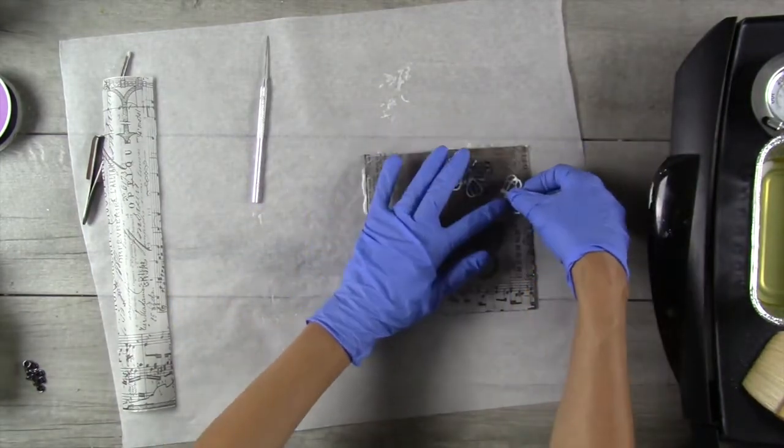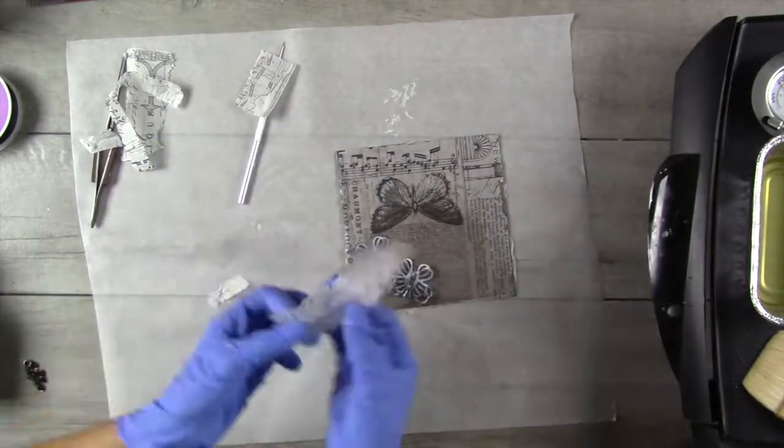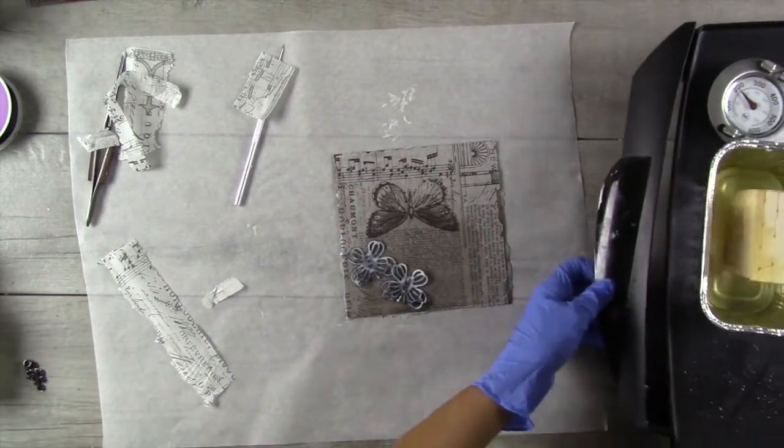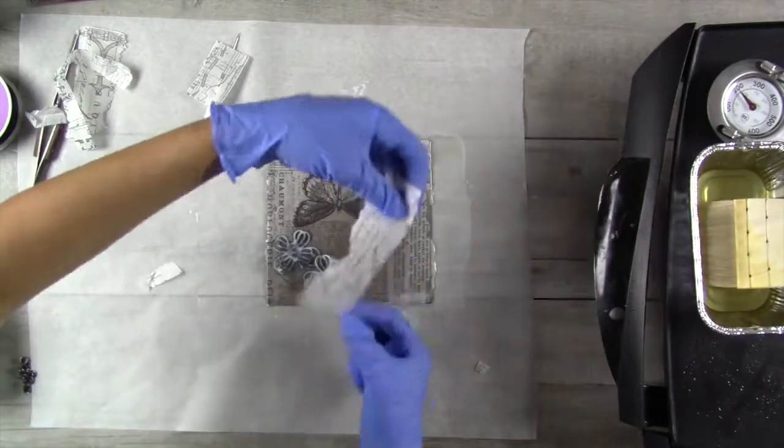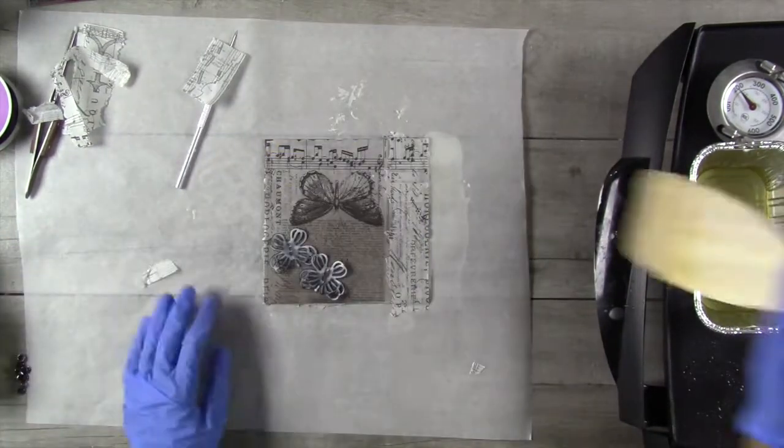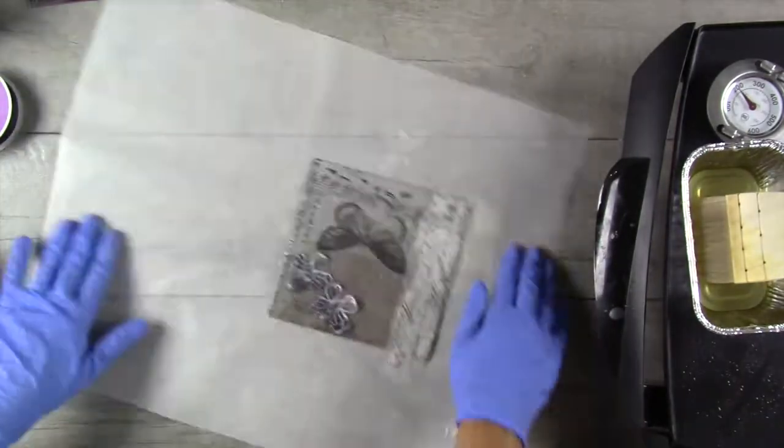Then I decided to add some additional tissue paper to one edge of the board just to get some nicer contrast in there and also because I'm planning on using this piece as the cover of an art journal. So I wanted to have some lighter areas on the side where I was planning on putting my binding.